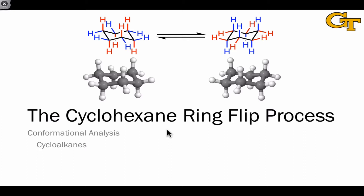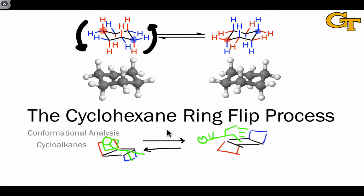Why exactly is this process called a ring flip? If we think about the cyclohexane ring as a chair and label the headrest and footrest in red and blue, what the chair flip does is actually flip the headrest into a footrest position and the footrest into a headrest position, causing the chair to lean the opposite direction. We can think roughly of the motions as a flipping down of the headrest and a flipping up of the footrest — this is called a ring flip process.